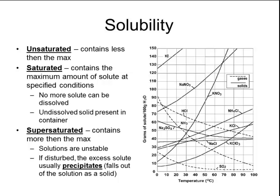The solubility of different substances can also be quantified using solubility curves. You can predict exactly how many grams of a solute will dissolve in 100 grams of water using these curves. A solubility curve is also known as a saturation curve, so any place along the curved line the solution would be saturated. Any amount below the curved line would be considered unsaturated, and any amount above the curved line would be considered supersaturated. For most solids, solubility increases as temperature goes up, with sodium sulfate being an exception. The dotted lines represent gases, and all of the gases decrease their solubility as temperature increases.